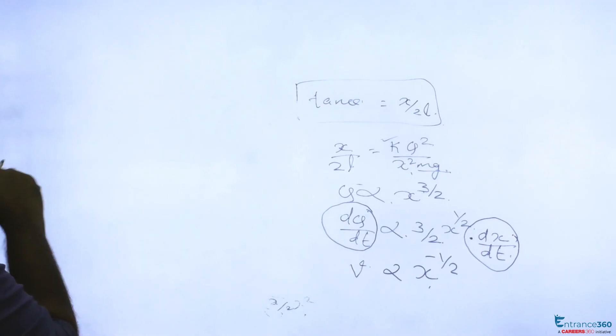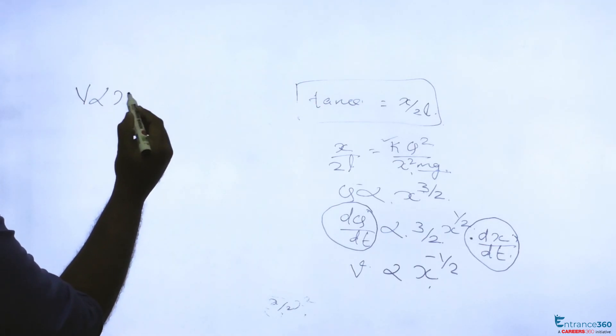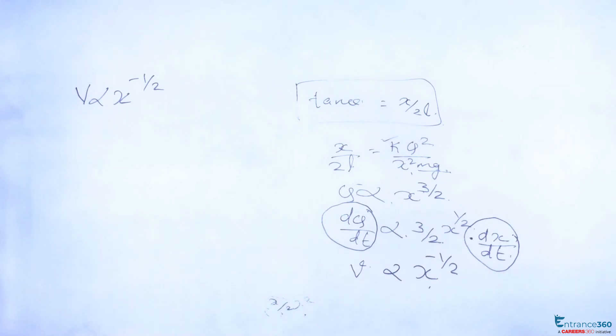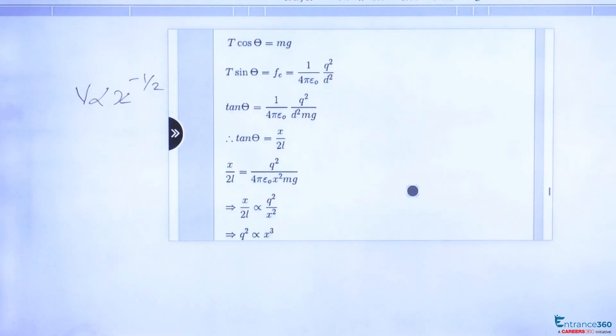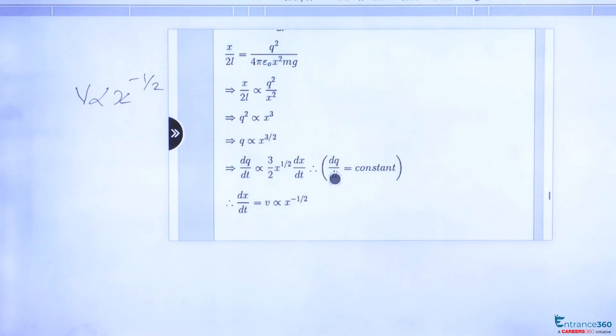So velocity V is proportional to x raised to minus half. We have done: first equated tan theta from force, tan theta is equal to force by mg, and tan theta from figure equal to x by 2L. After equating and finding dq by dt, we got V is proportional to x raised to minus half.